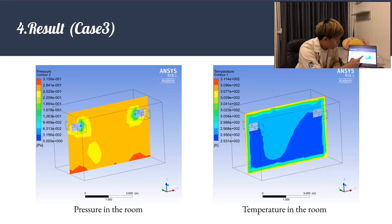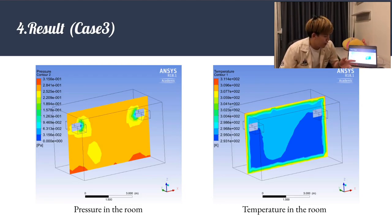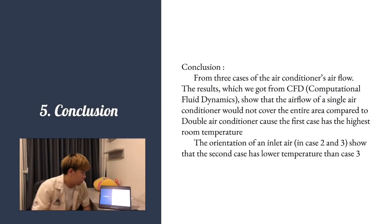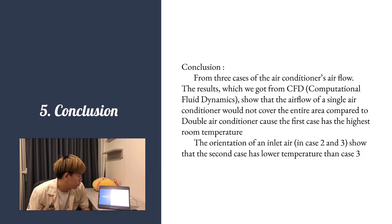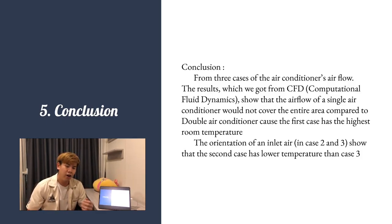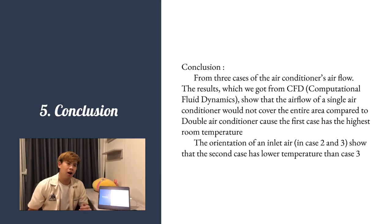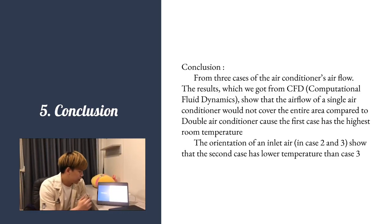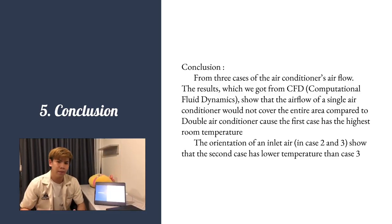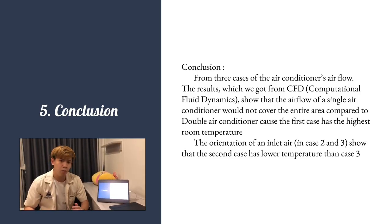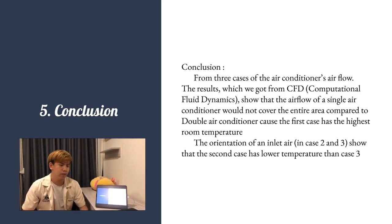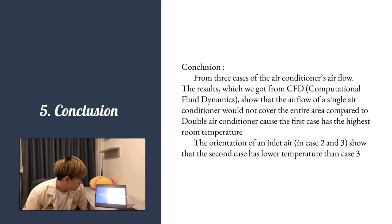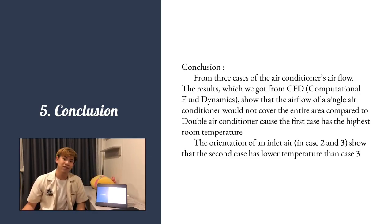To conclude from the three cases, Case 2 is the best configuration to cool the entire room. Case 1 cannot cover all the area, and in Case 3 the temperature is not uniform throughout the room. Therefore, Case 2 with two opposing air conditioners is the best placement.